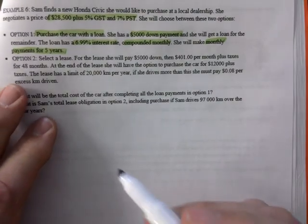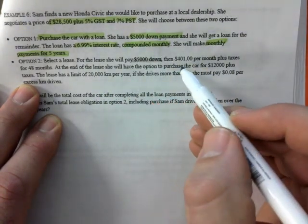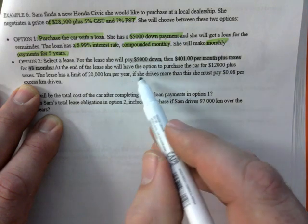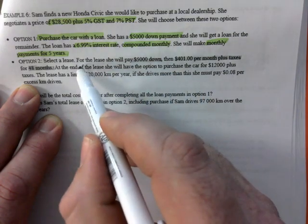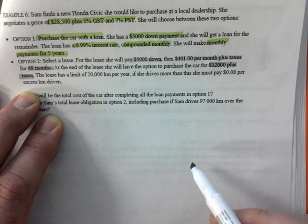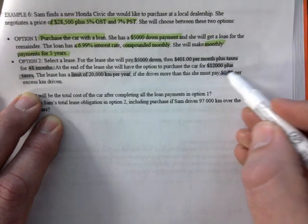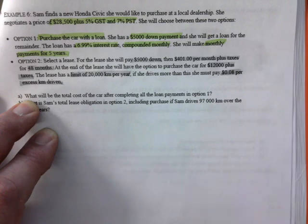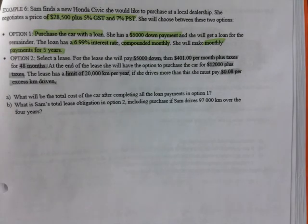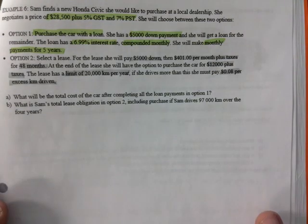That's option one. Option two: Select the lease. For the lease, she will pay $5,000 down, $401 per month plus taxes for 48 months. At the end of the lease, she will have the option to purchase the car for $12,000 plus taxes. There's a limit of 20,000 kilometers per year. If she drives more, she'll pay 8 cents per kilometer over that. What would be the total cost of the car after completing all the loan payments in option one?